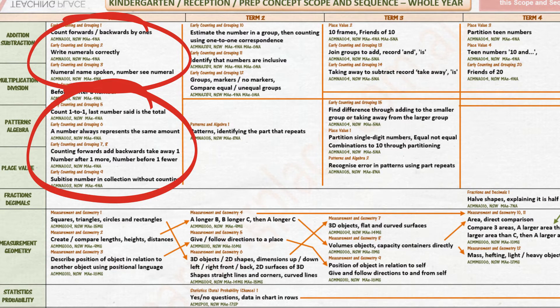They use their understanding of counting forwards and backwards to explain that when we count forwards we are adding one each time, and when we count backwards we are taking away one each time. The number after is one more and the number before is one fewer.